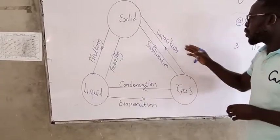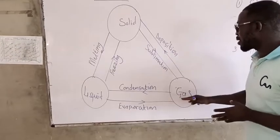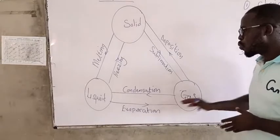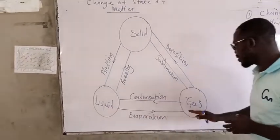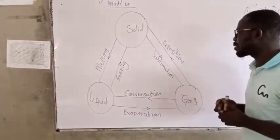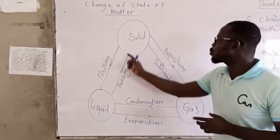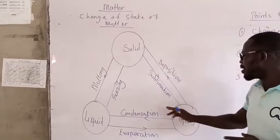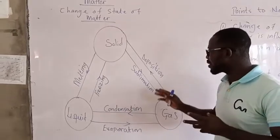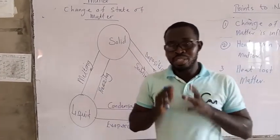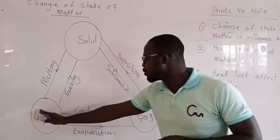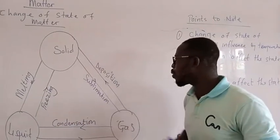We also have a situation where gases will change directly into solid without passing through the liquid phase. Gases will change directly into solid without passing through the liquid phase, and that is what we call deposition. The reverse is when we have solid changing directly into gas. For instance, the naphthalene ball can change directly from solid to gas without passing through the liquid phase, and this is what we call sublimation.